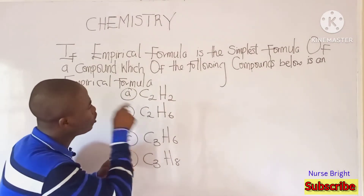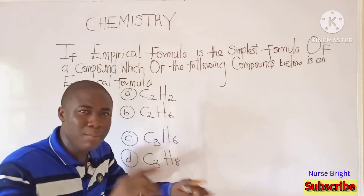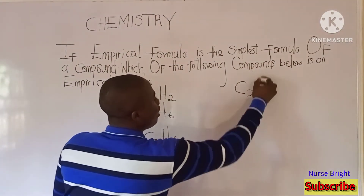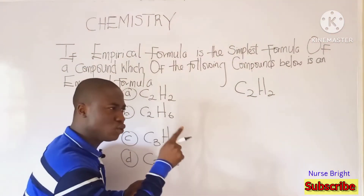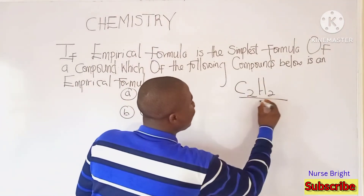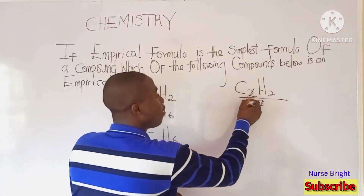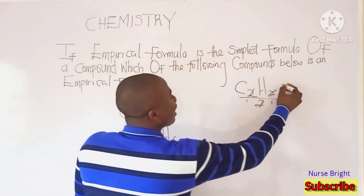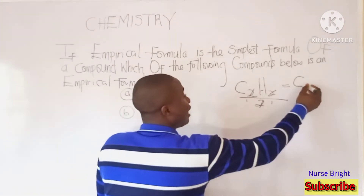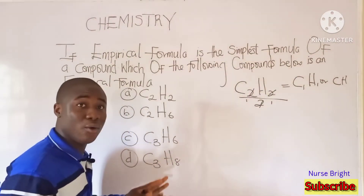Looking at option A — is it an empirical formula? The empirical formula is the simplest form a compound can exist. Option A is C2H2. Is C2H2 the simplest form this compound can exist? No, I can break it down by dividing all the numbers by 2. Dividing gives us C1H1, or simply CH. So option A is not an empirical formula.